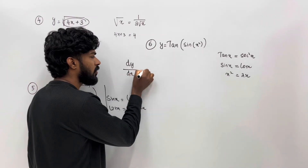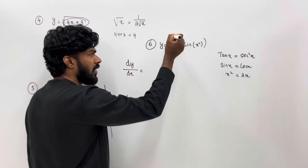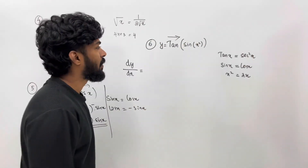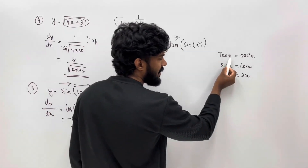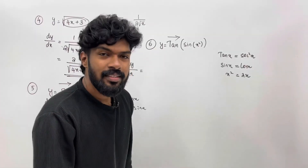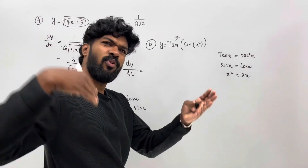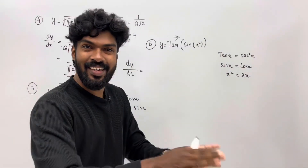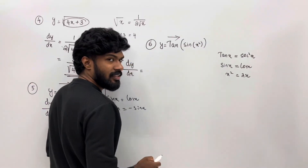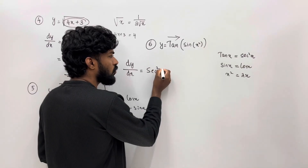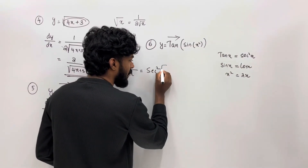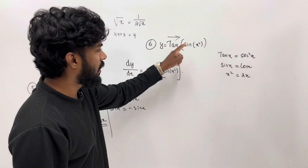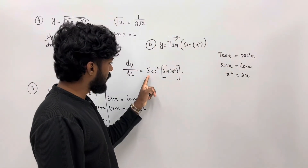dy/dx: the outer function is tan, the derivative of tan is sec². Tan(sin(x²)) gives sec²(sin(x²)). The next function is sin, so we multiply by cos(x²), then by the derivative of x², which is 2x.